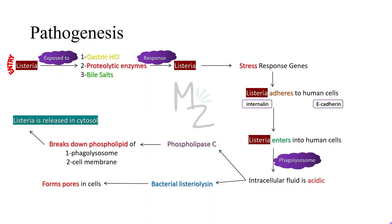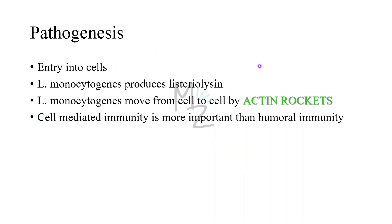Now that Listeria is present in the cytoplasm of the cell, here is something really amazing: Listeria monocytogenes can move from one cell to another by means of actin rockets. These are filaments of actin that polymerize and propel the bacteria through the membrane of one human cell into another, allowing bacteria to spread infection from cell to cell. Because Listeria preferentially grows intracellularly, cell-mediated immunity is the more important host defense than humoral immunity. Suppression of cell-mediated immunity predisposes to Listeria infections.